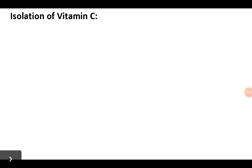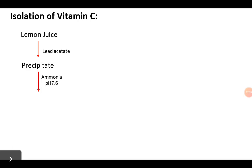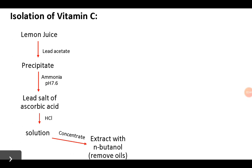Vitamin C was first isolated from lemon juice. Lemon juice is treated with lead acetate, which precipitates along with many other chemicals including vitamin C. The precipitate is treated with ammonia, bringing the pH from 7.2 to 7.6, so that the lead salt of ascorbic acid is exclusively separated. Hydrochloric acid is then added, converting lead to lead chloride precipitate, while ascorbic acid, being water soluble, stays in solution.